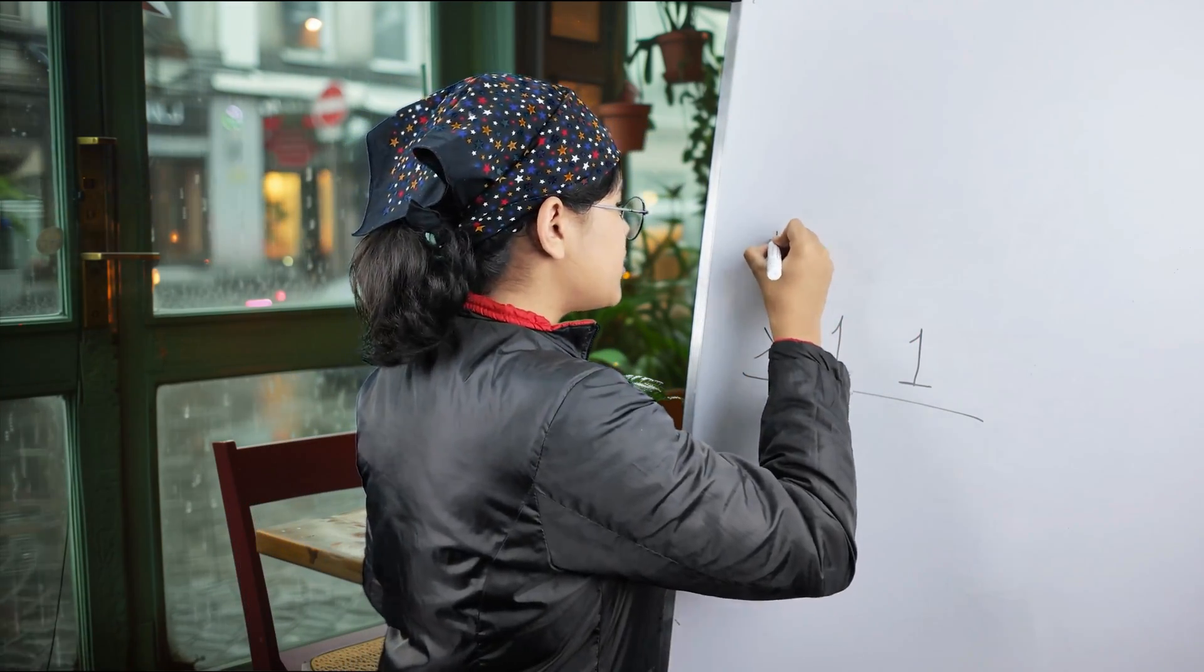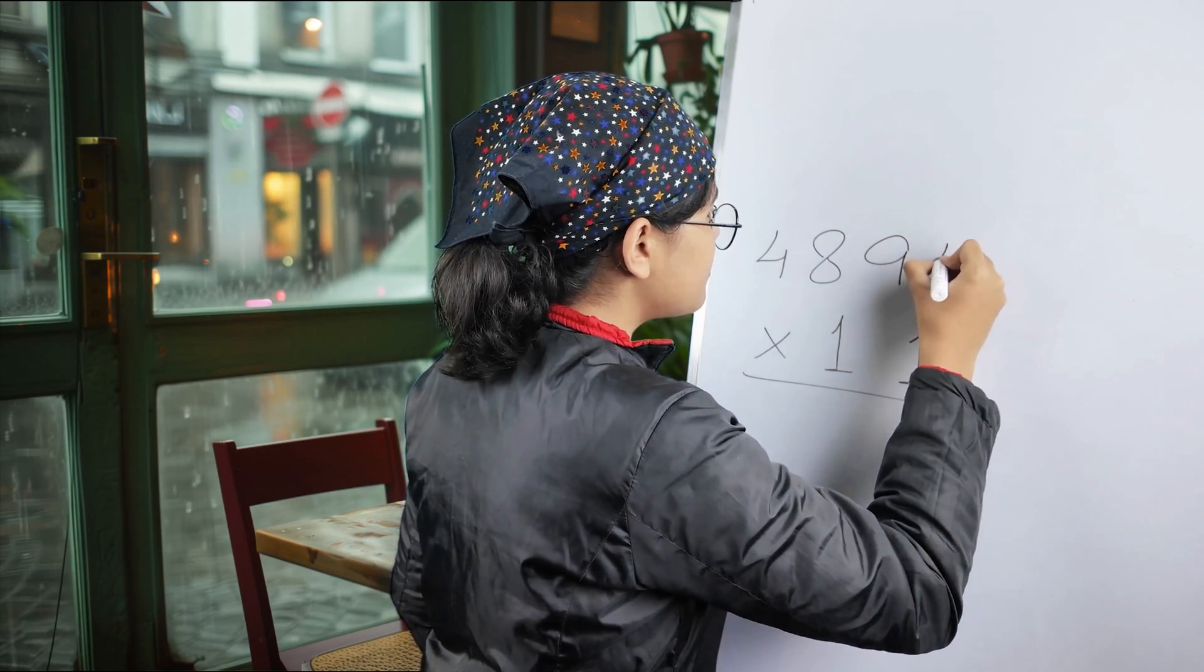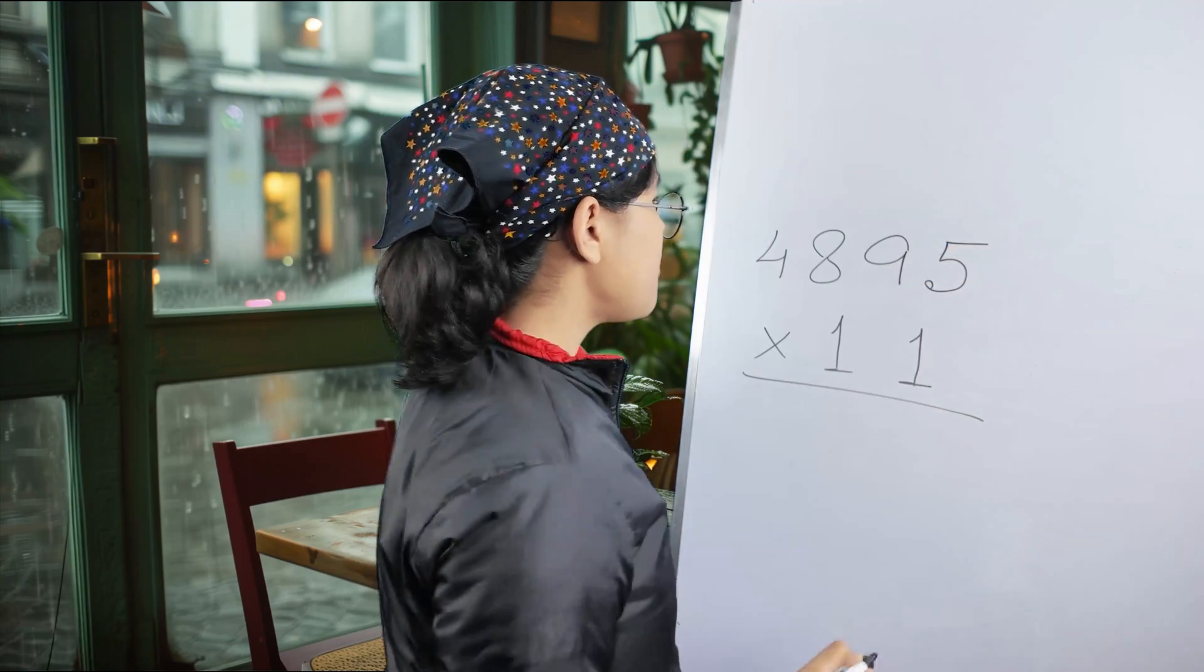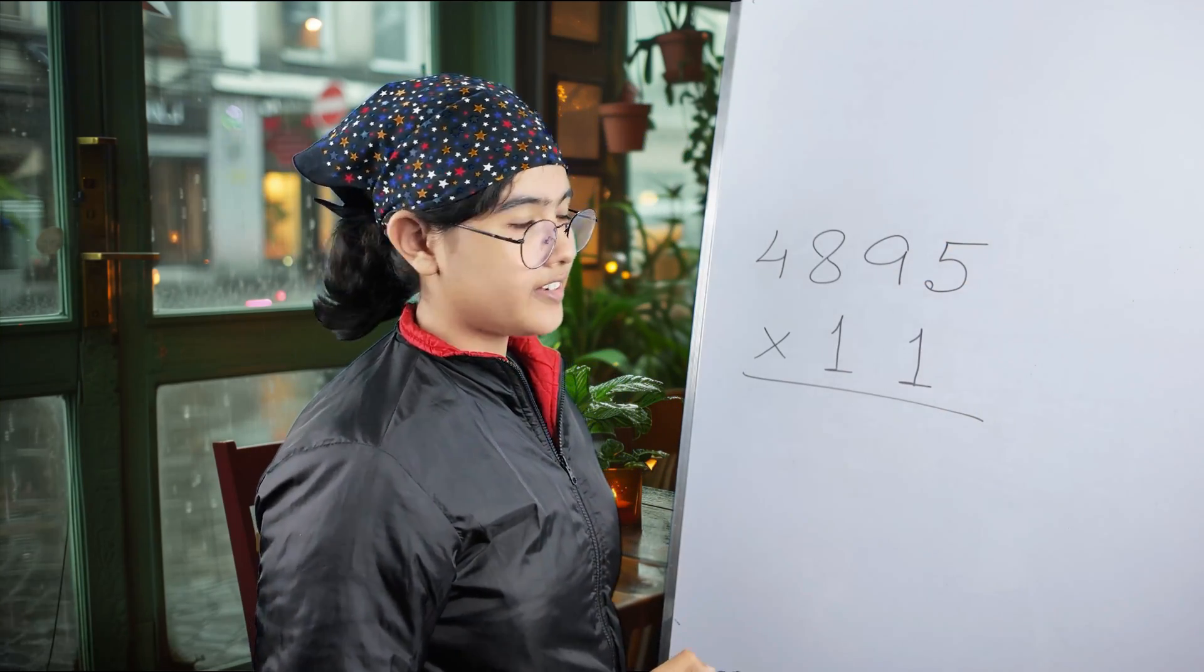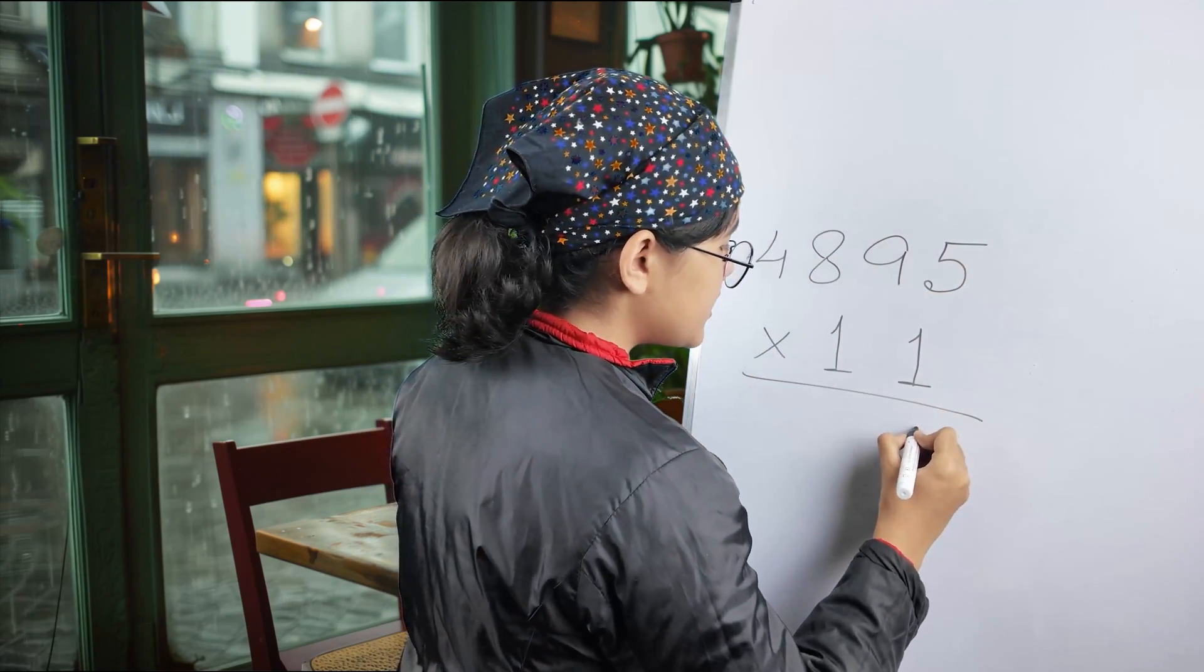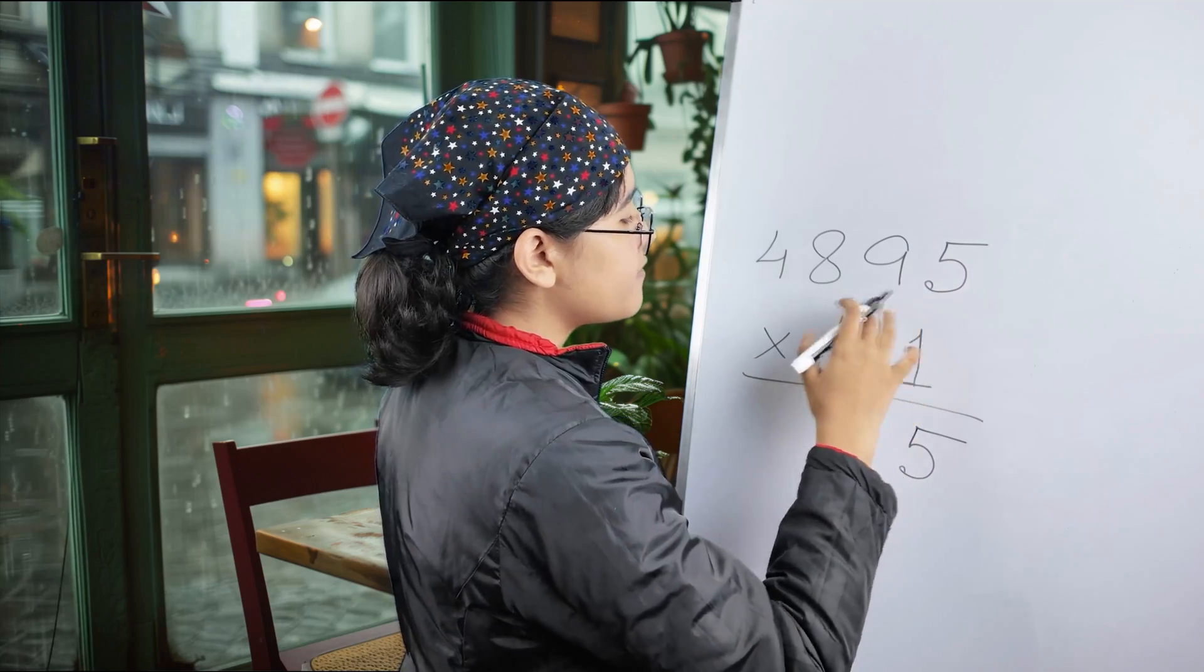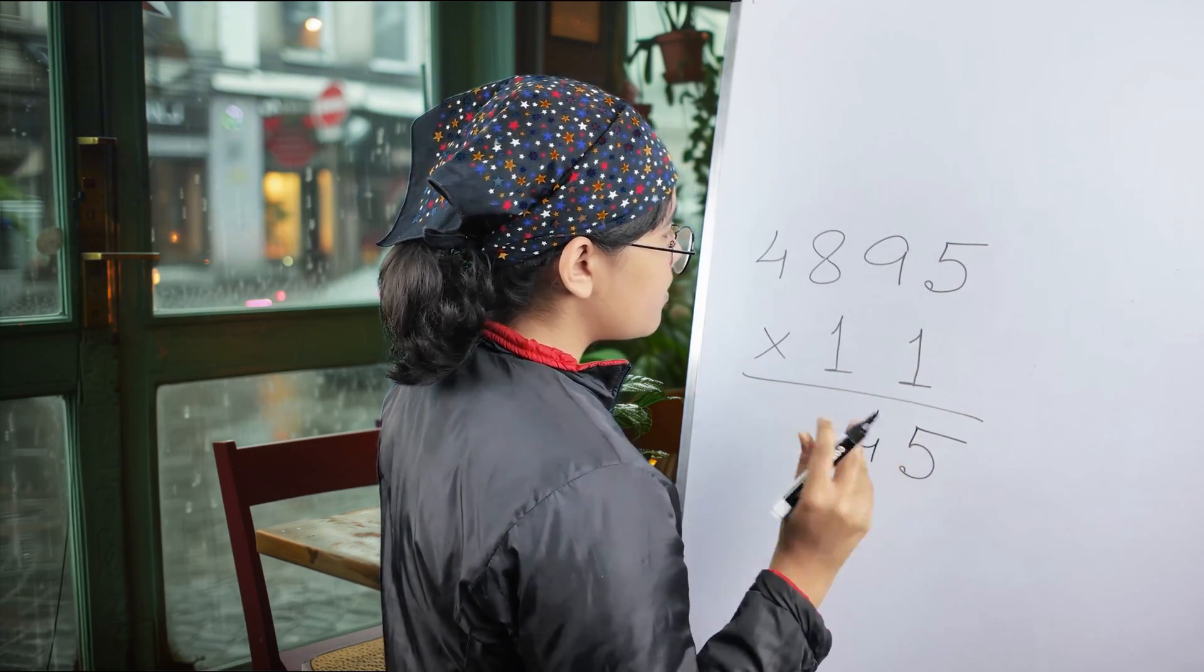Next one. We'll take a four-digit number, something like this one: 4,895 multiplied by 11. So, as usual, we'll put down this 5. Add up 9 plus 5, it's 14. 1 in hand.